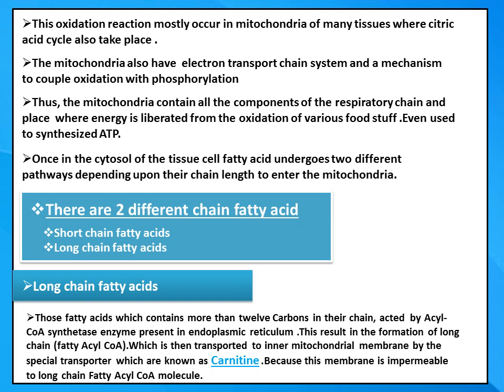Once in the cytosol of the tissue cell, fatty acids undergo two different pathways depending upon their chain length to enter the mitochondria. There are two different categories: long-chain fatty acids and short-chain fatty acids.